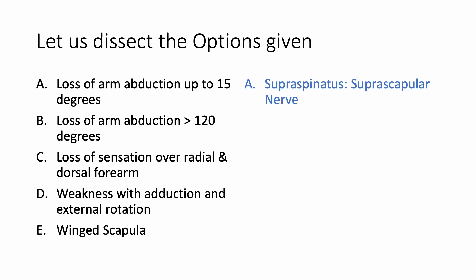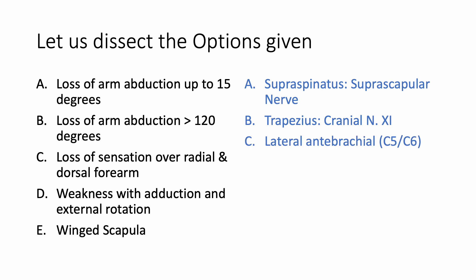Option B says loss of arm abduction greater than 120 degrees, and that is the function of trapezius. The nerve supply for trapezius is cranial nerve 11.